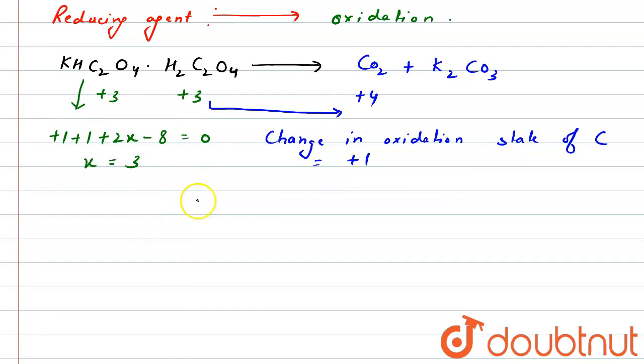Therefore, total change in oxidation state of carbon will be... We have 4 carbon. So, 4 multiplied by 1 equals to 4. Therefore, n-factor is 4.